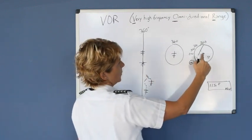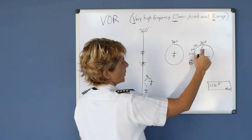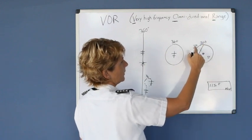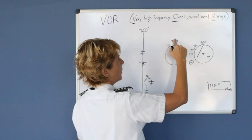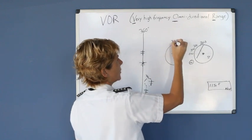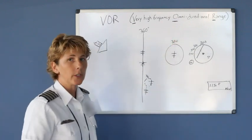And so you set your course 360, you pick a heading, a logical heading to intercept it and then you apply that heading. So then you'd actually turn your aircraft to 330 degrees.